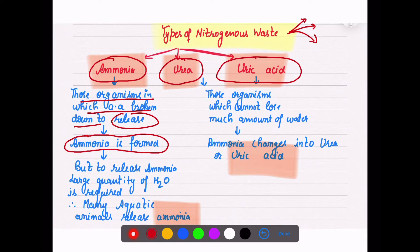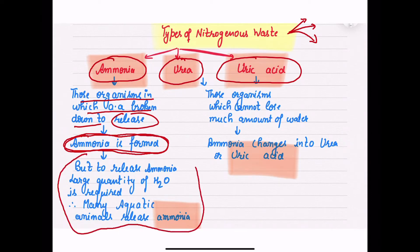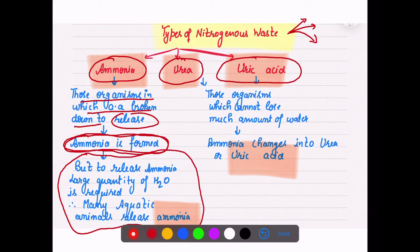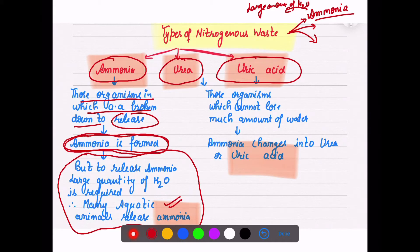Amino acids are broken down and changed into ammonia. They undergo a deamination process and ammonia is formed, which has to be excreted out. Ammonia is very, very toxic. To release ammonia, a large quantity of water is required. So only those organisms living in water can release nitrogenous waste in the form of ammonia, because terrestrial organisms cannot afford to lose so much water.